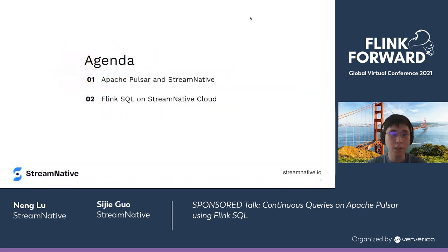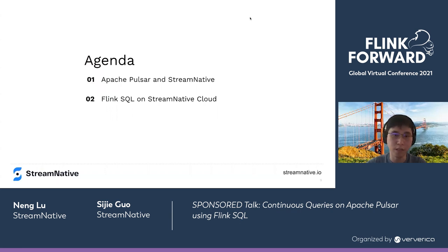In today's talk, we will mainly be discussing two parts. The first part is Apache Pulsar and Stream Native, and the second part will be Flink SQL on Stream Native Cloud.